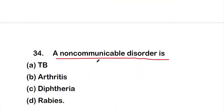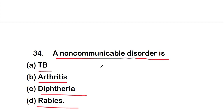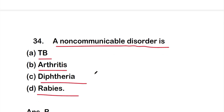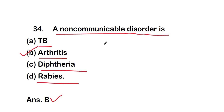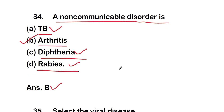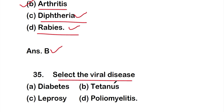Question number 34: A non-communicable disorder is — Option A: tuberculosis, Option B: arthritis, Option C: diphtheria, or Option D: rabies. The right answer is Option B, arthritis. Arthritis is a non-communicable disorder, meaning it cannot be transferred from person to person, unlike TB, diphtheria, and rabies which are caused by bacteria.